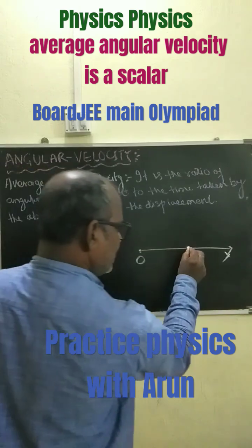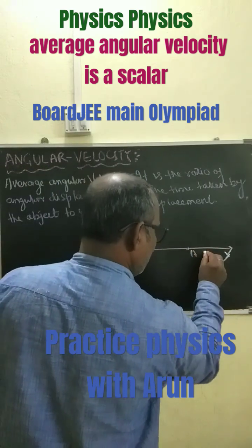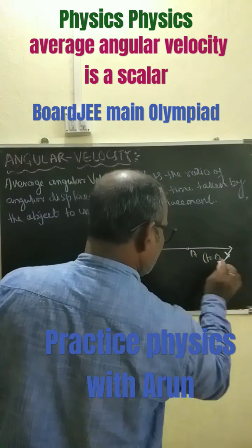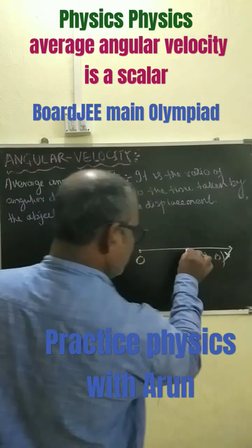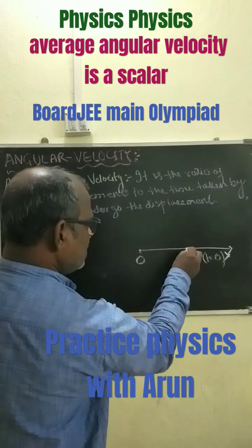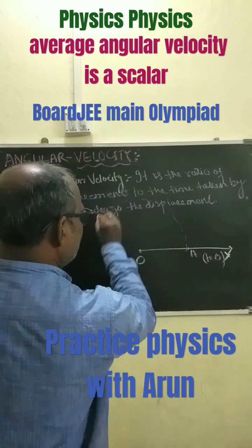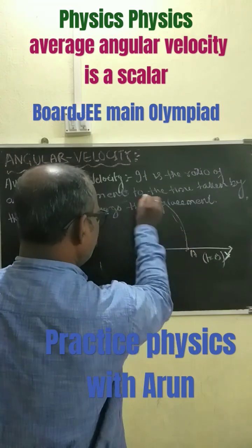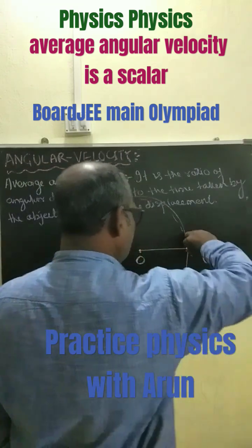Let a particle be at position A when t equals 0 seconds. At t equals 0 seconds, this particle is moving in a circular path.